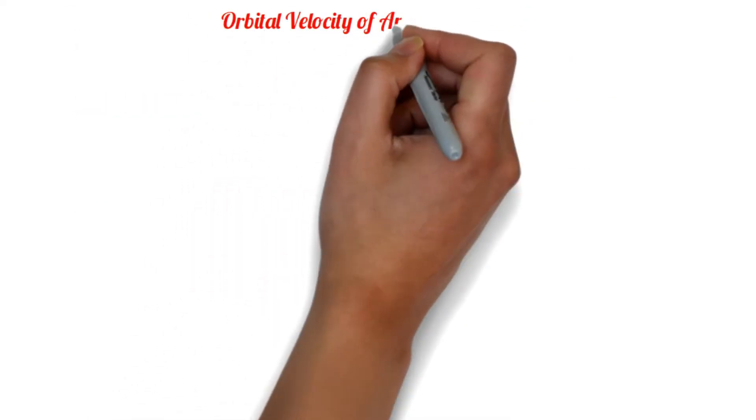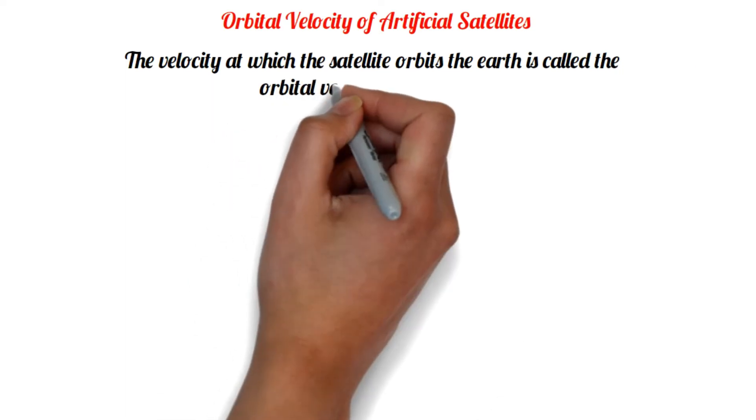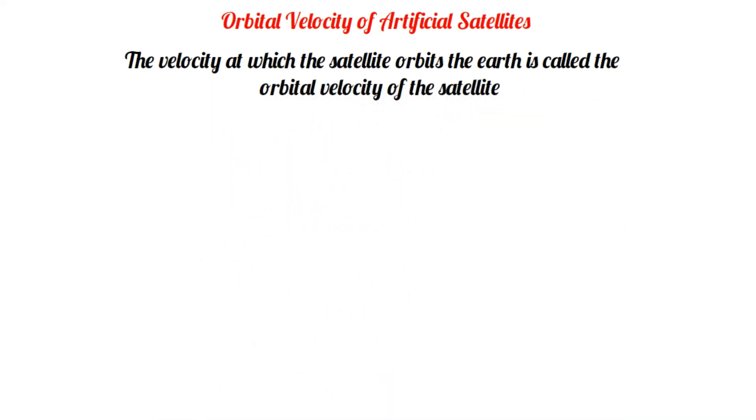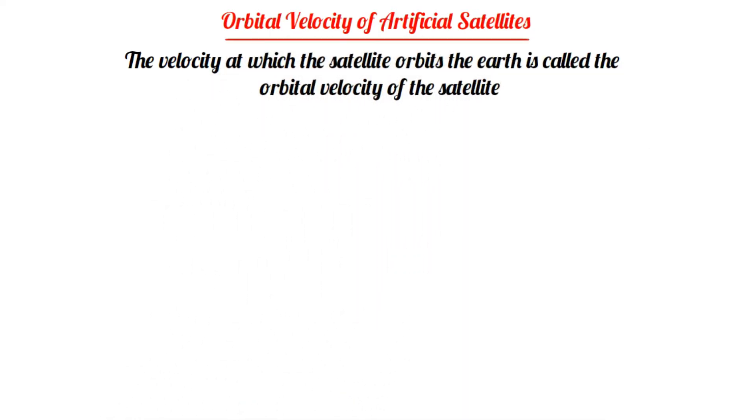Orbital Velocity of Artificial Satellites. The velocity at which the satellite orbits Earth is called the orbital velocity of the satellite. Now we will determine the formula for the orbital velocity of an artificial satellite orbiting the Earth.